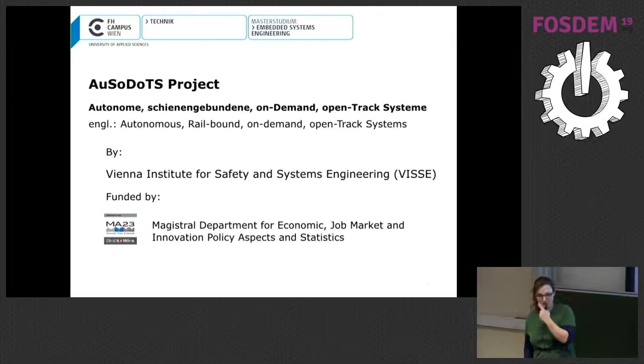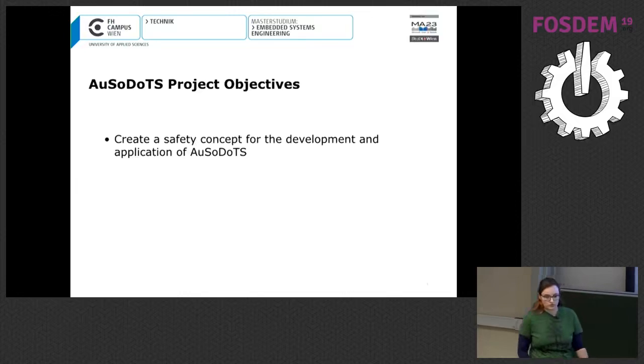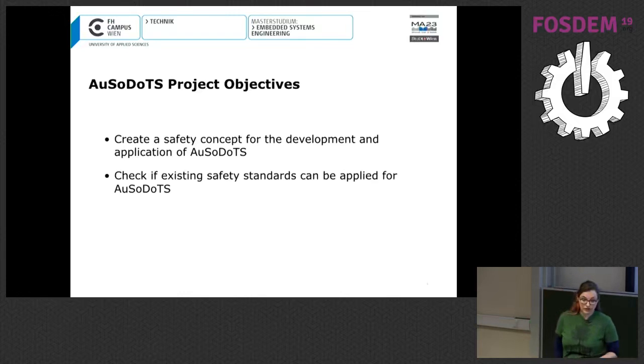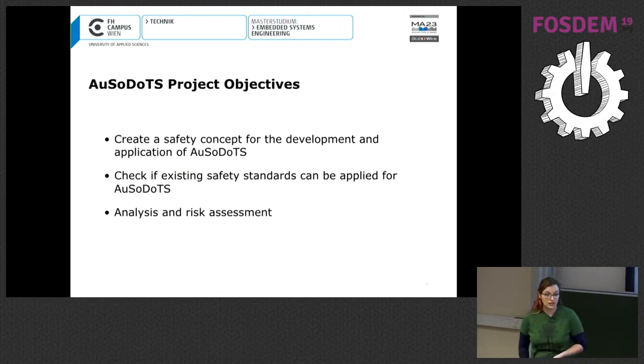In English, it means Autonomous Railbound On-Demand Open-Track Systems. It's a project by the Vienna Institute of Safety and Systems Engineering at EFA Campus Wien and it's funded by the Magistral Department for Economics, Job Market and Innovation Policy Aspects and Statistics. The MA23 is funding a lot of college, university and research projects in Vienna. So, what are the project objectives? They want to create a safety concept for development and application of AUSWODOTS. They want to check if the existing standards, for example, the CENELEC standard can be applied for AUSWODOTS and they want to perform and analyze a risk assessment.